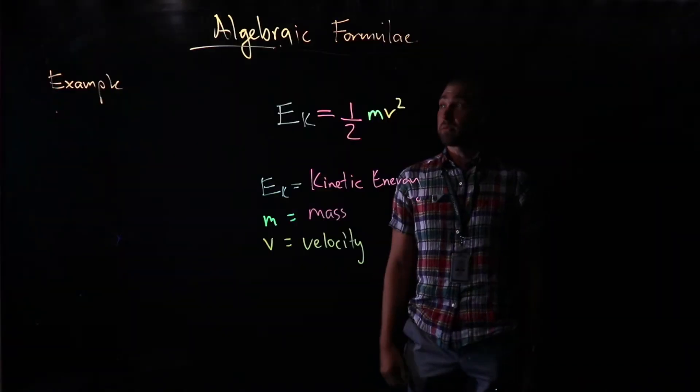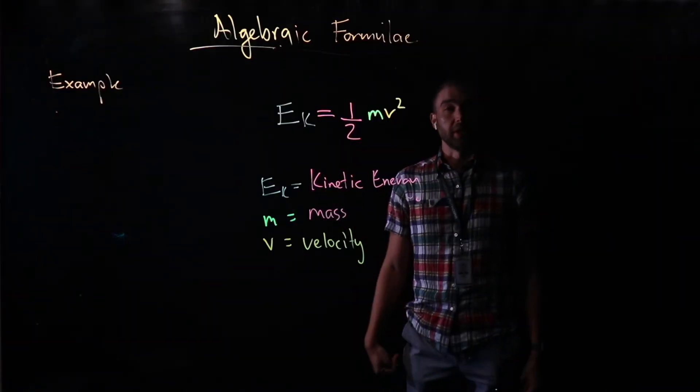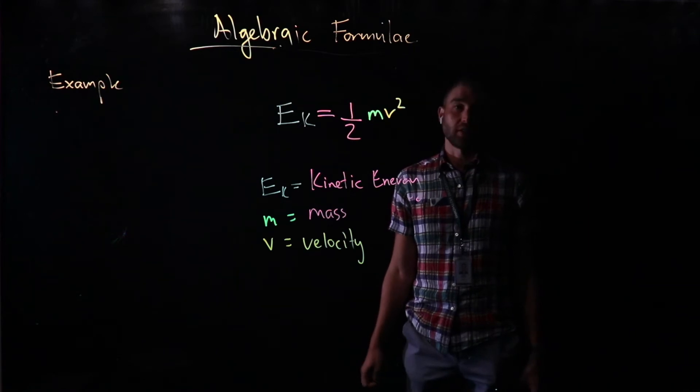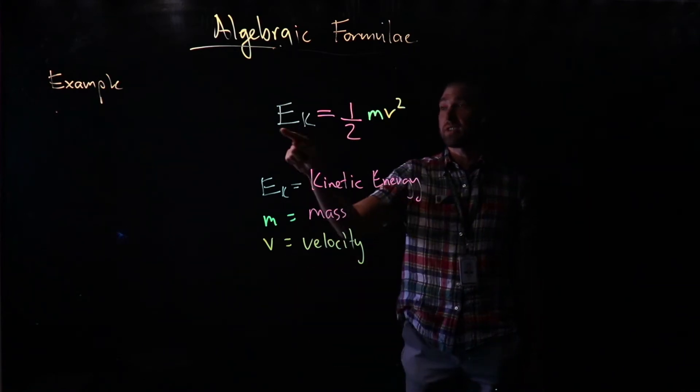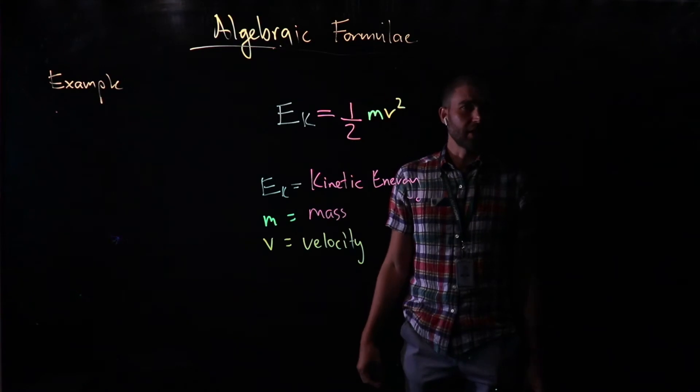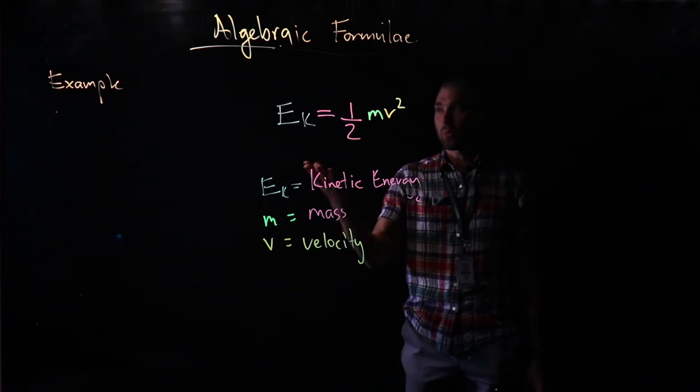Let's look at an example. We're going to use this algebraic formula here. This is a formula used in physics to calculate kinetic energy, Ek. Kinetic energy is the energy that anything has if it's moving. Our formula is: the kinetic energy equals half times the mass of the object you're moving.